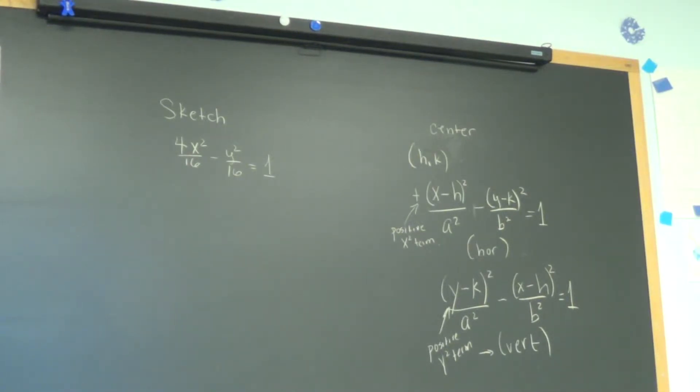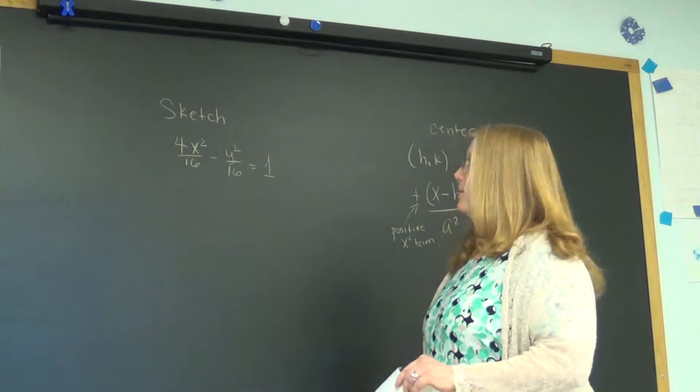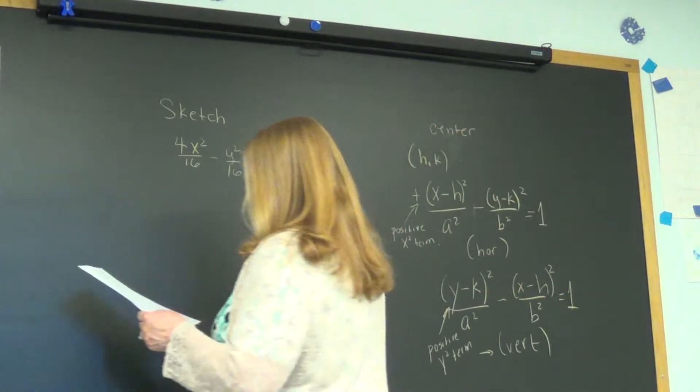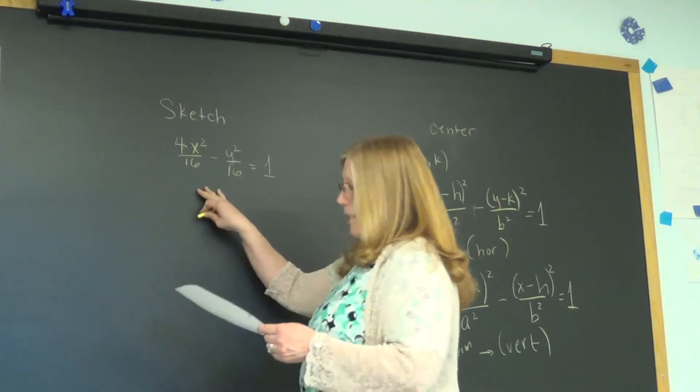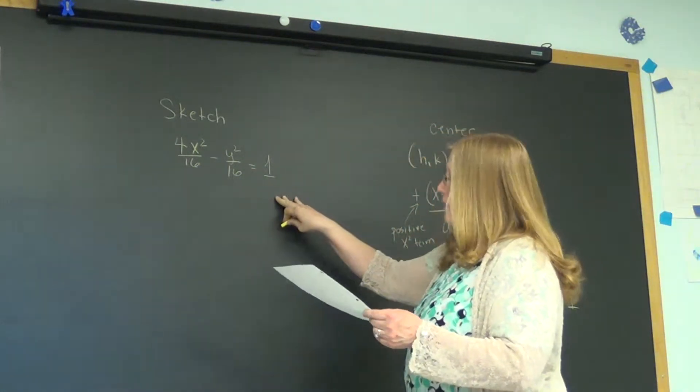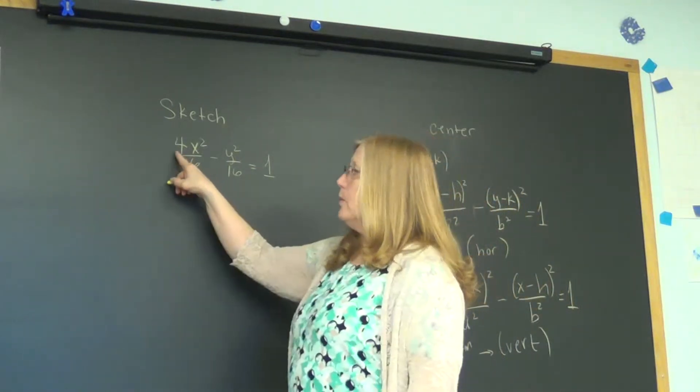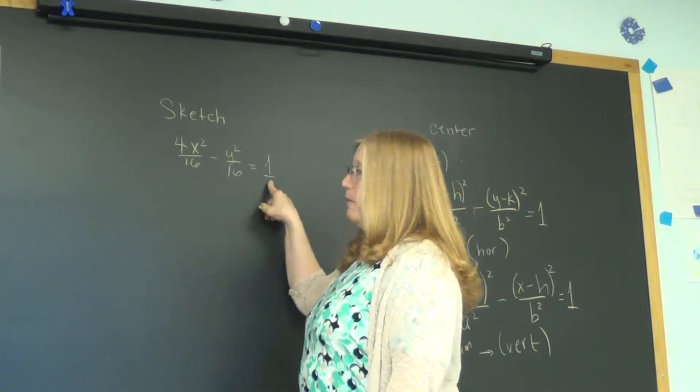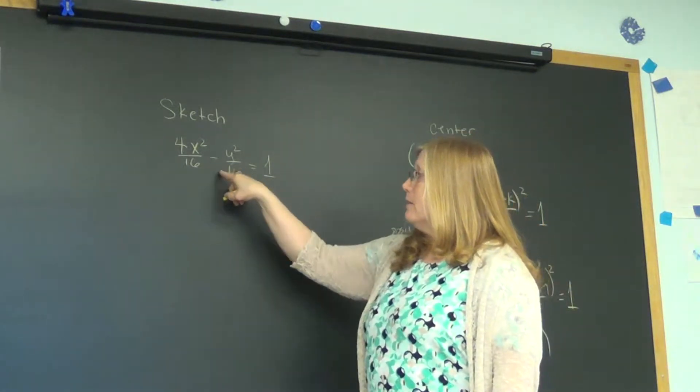Alright, here we are back. The command is to sketch this hyperbola and identify all the different parts. Let's get to work on that. Let's first of all find that it is sitting here in standard form, almost, except this four cannot be here. So we have the one that we need and this was fine.